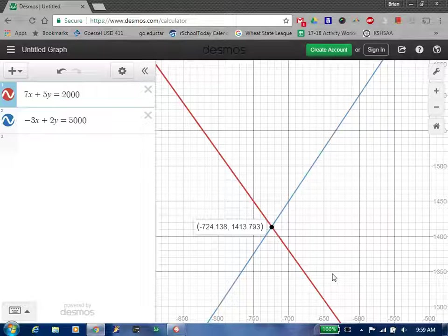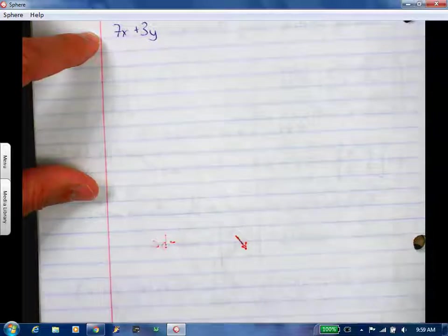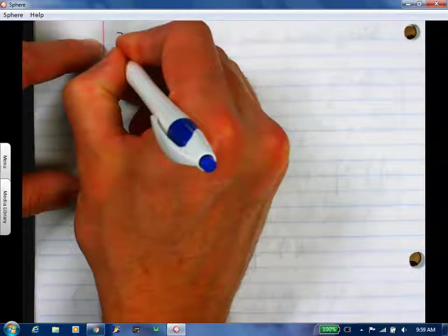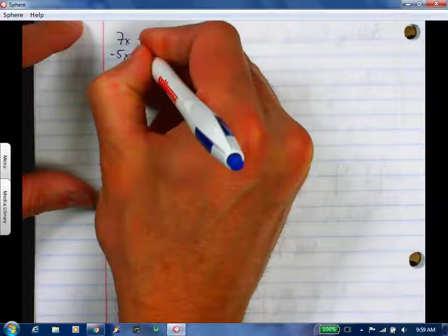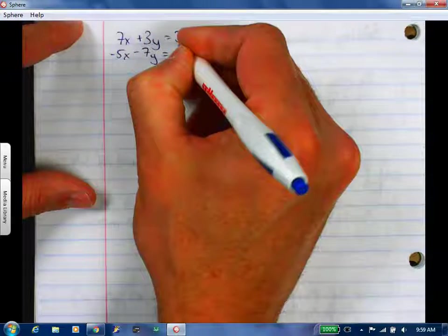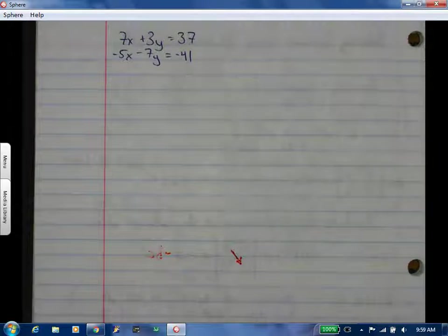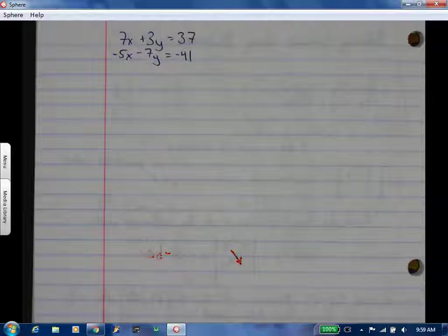7x plus 3y equals 37. Negative 5x minus 7y equals negative 41. Now just so you know, when we do go to the 3x3, the process is the same. The tests are all the same. It's just finding the determinant of a 3x3 matrix takes more time.